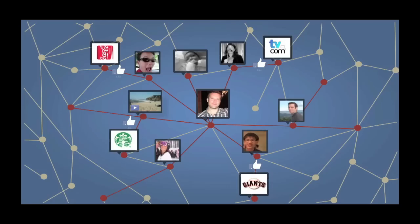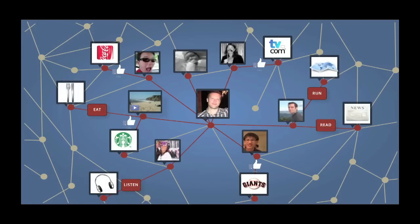But 'like' doesn't quite cover everything. I don't just like a movie — I watch a movie or I rate a movie. And so what we launched in September 2011 is the next version of the Open Graph, and that allows you to connect to any object on the web in any way you want. So I can watch a movie, I can read a news article, I can listen to a song, and I can eat at a restaurant.